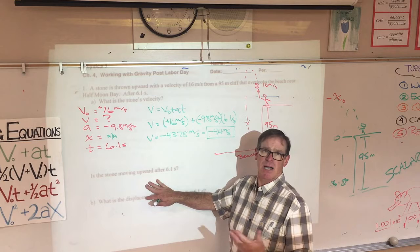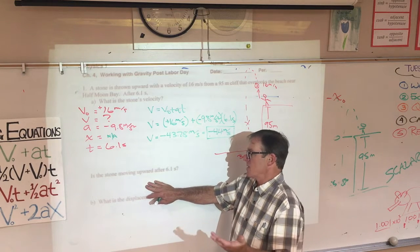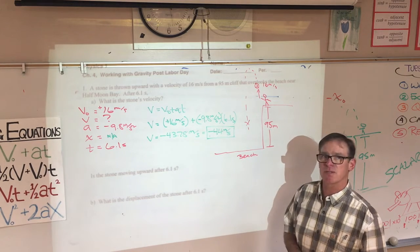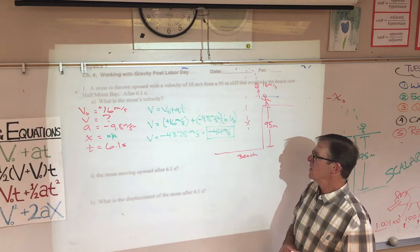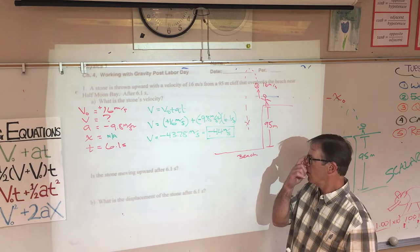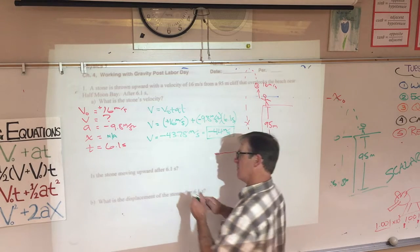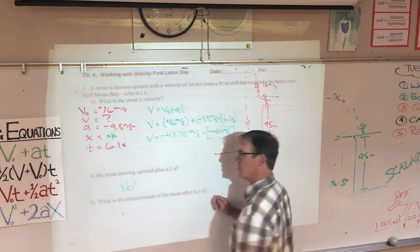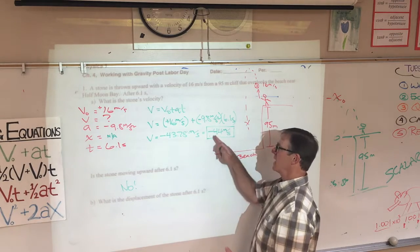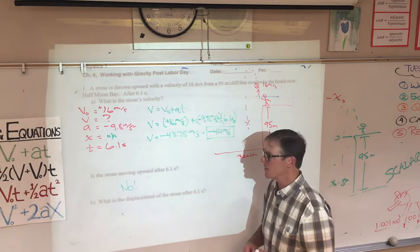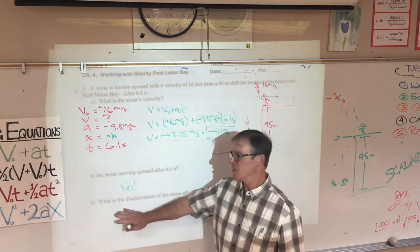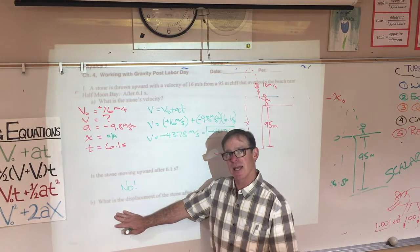I ask a kind of a parenthetical question. Is the stone moving upward after 6.1 seconds? Yes or no? The fact that the final velocity comes out negative tells us no. It is moving downward. It has a negative velocity. It's moving in the negative direction. The next question is what is the displacement? And I'll do that next.